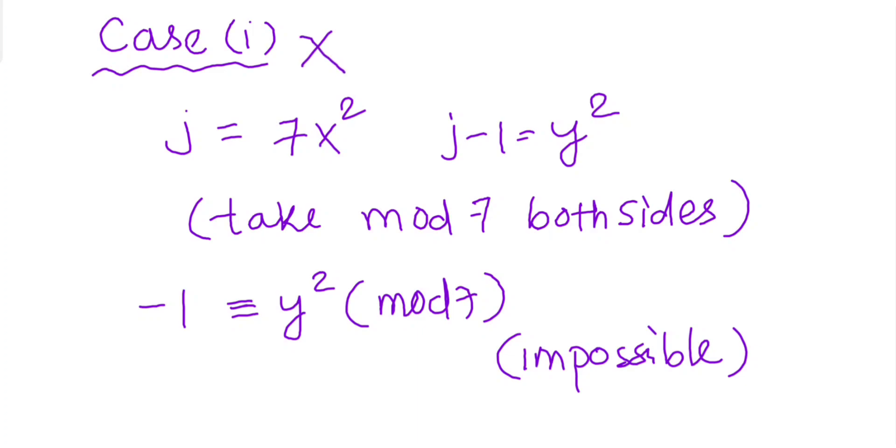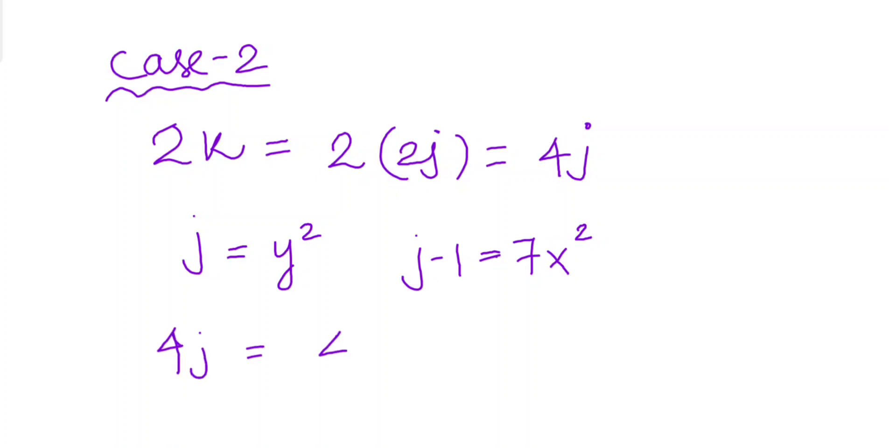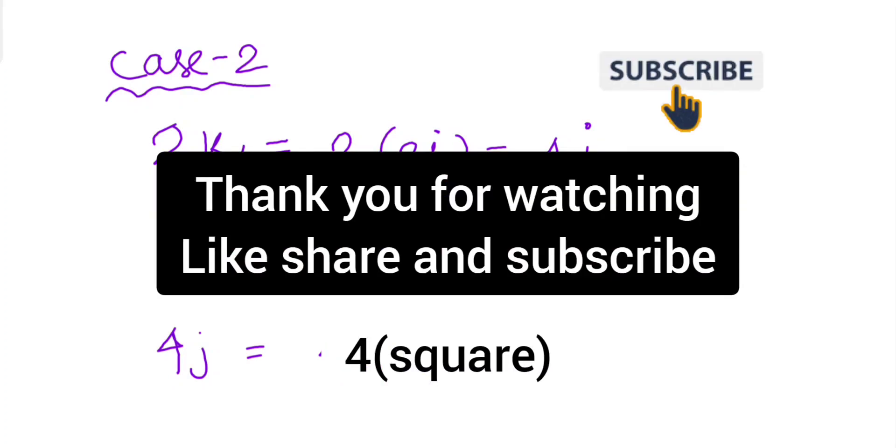So we will discard this case. Now let's go to second case. From second case we will see that 2k = 2(2j) = 4j. And from second case we saw that j = y² and j - 1 = 7x². From analyzing this we get that 4j = 4 times some square number which finishes our proof. Hence is proved. Thank you for watching, see you next time.